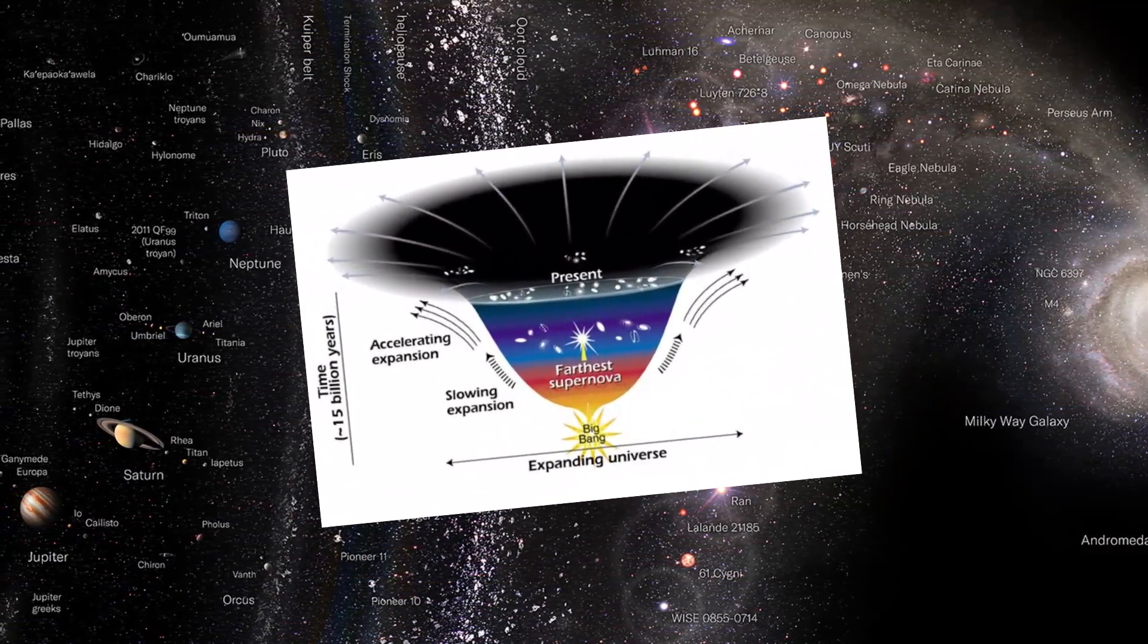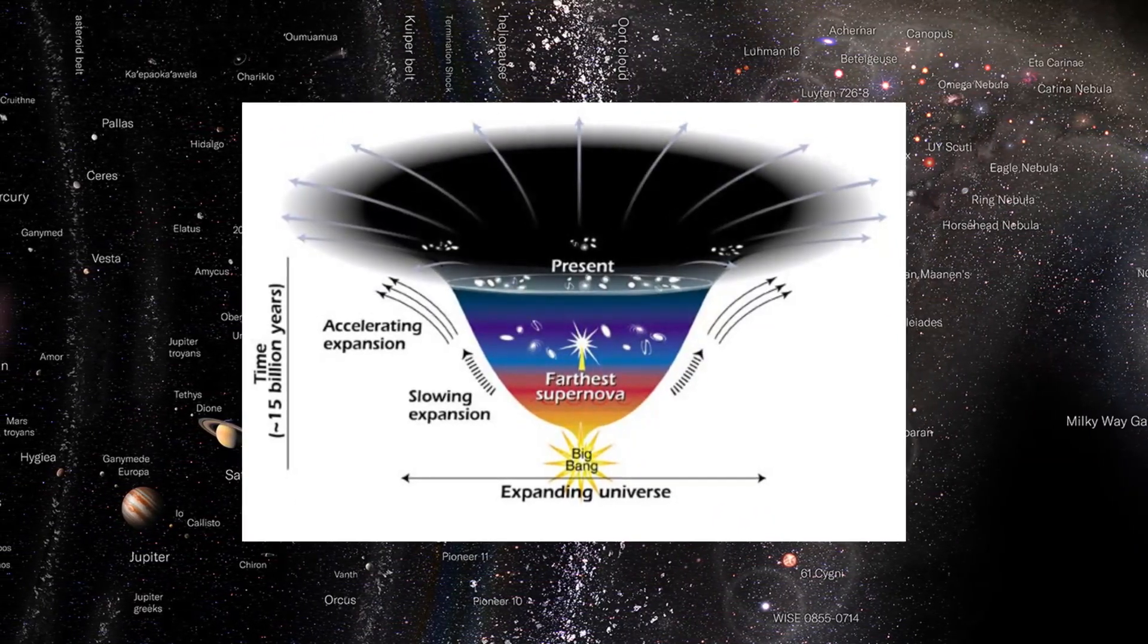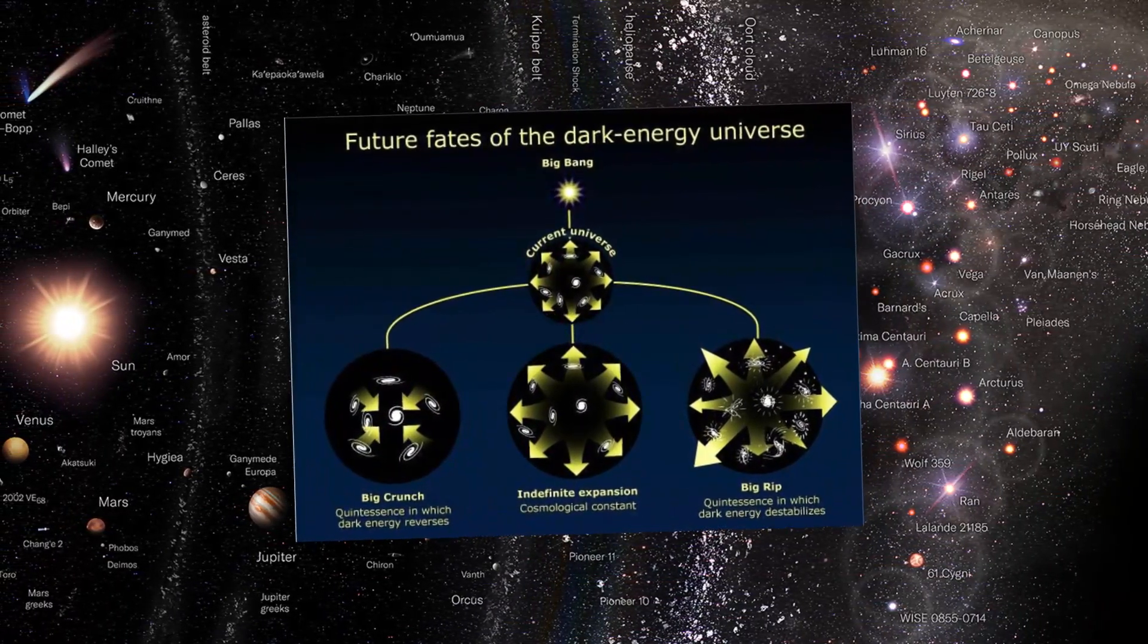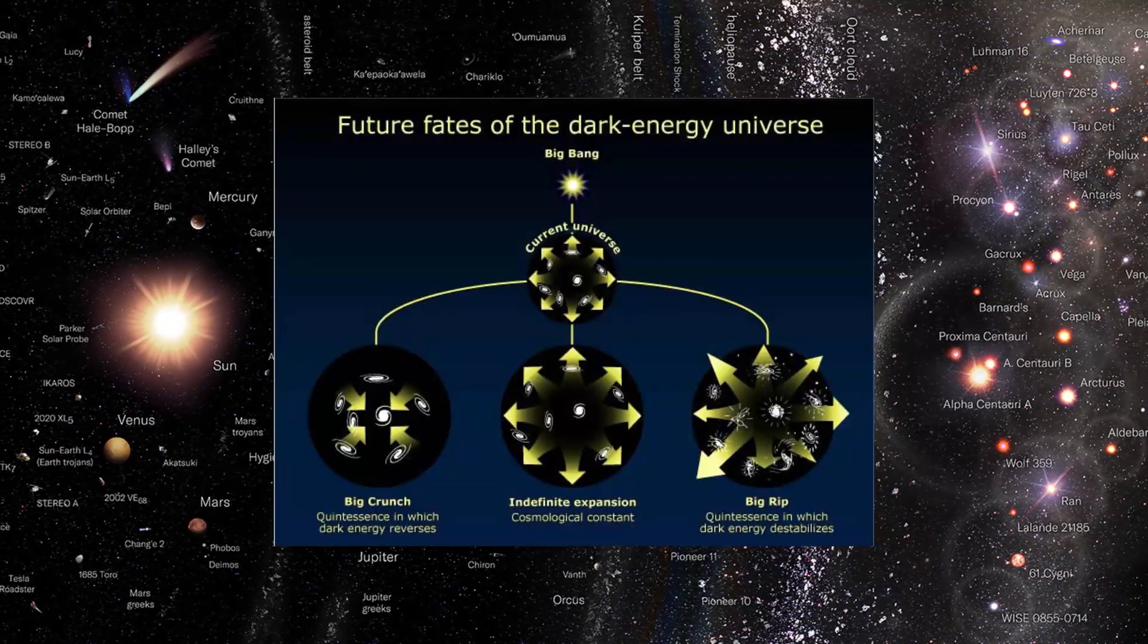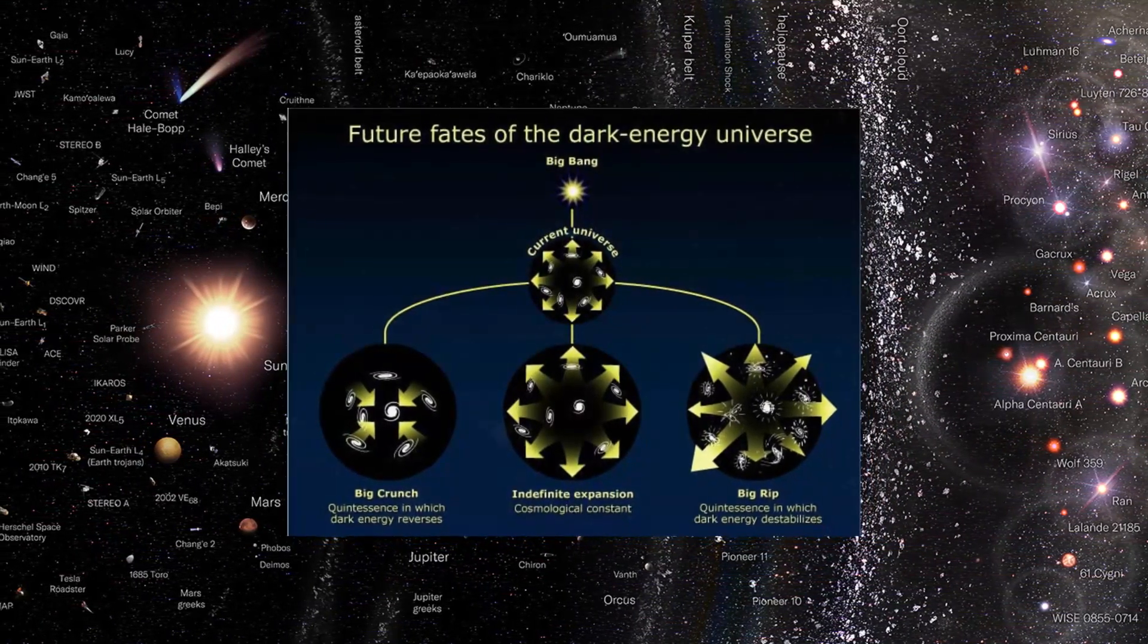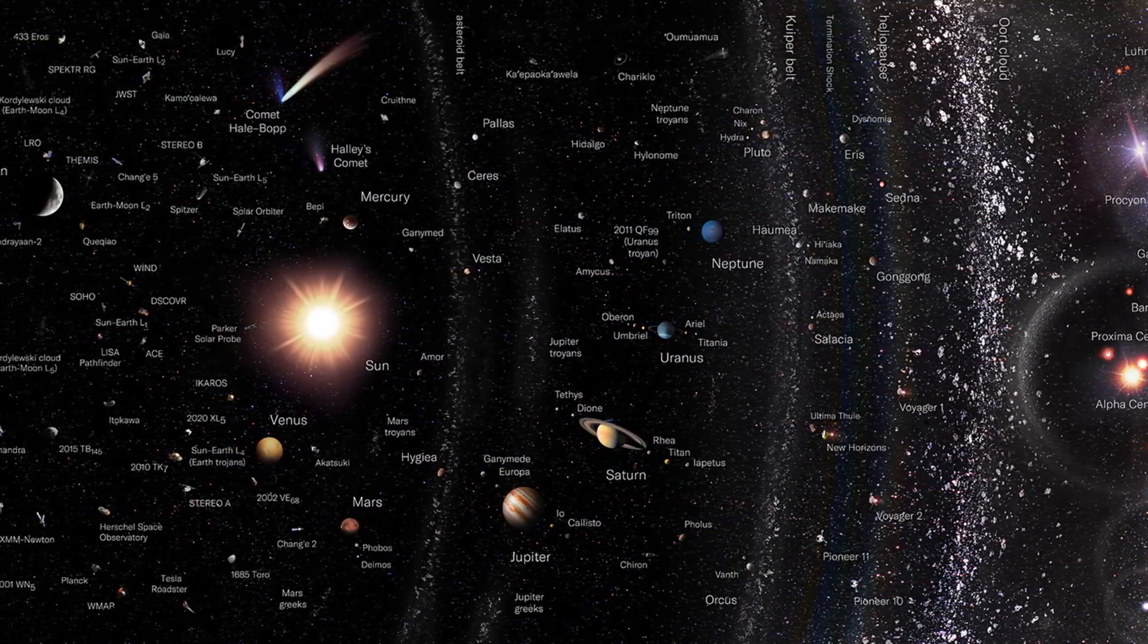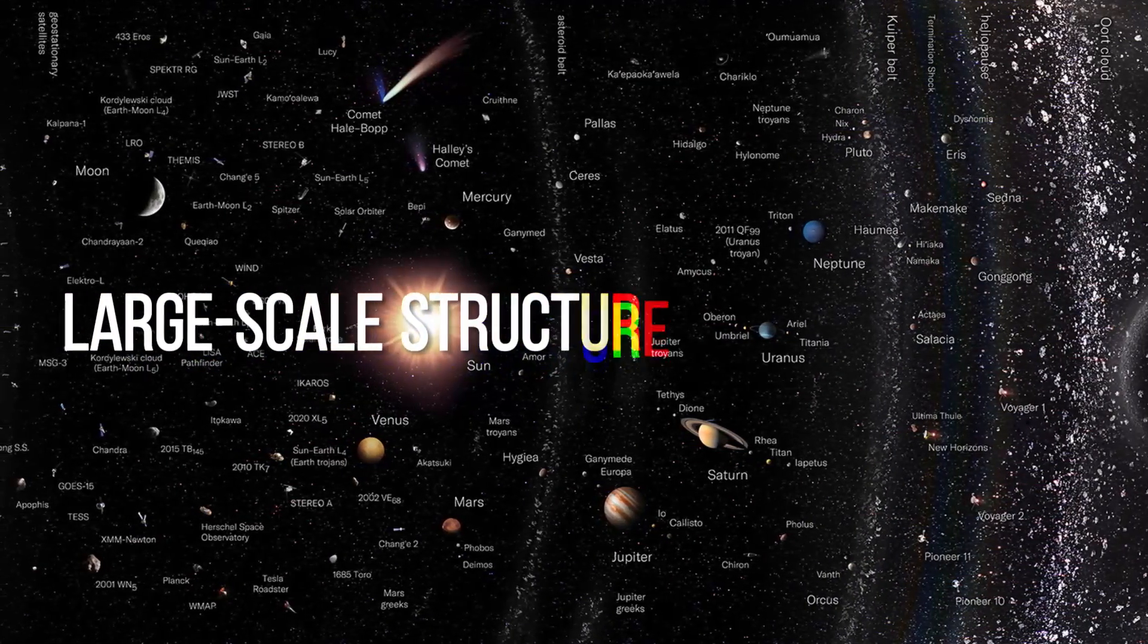Data obtained from research on galaxies and galaxy clusters also provide support for the existence of dark energy. The spatial distribution of these structures has revealed a clustering pattern that suggests a dominant presence of dark energy, acting as a repulsive force counterbalancing the gravitational attraction of matter. These observations provide indirect evidence for the existence of dark energy and its influence on the formation of large-scale structures in the universe.